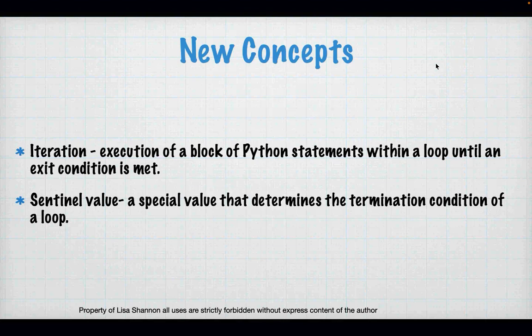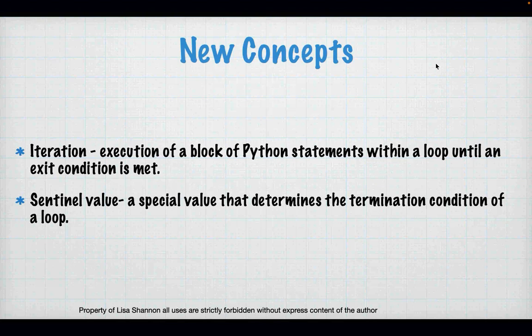We have two new concepts: iteration and sentinel value. An iteration is one trip through a loop — that's all it is. A sentinel value is a special value that determines the termination condition of the loop. If you don't have a loop with a terminating condition, it will run forever and chew up at minimum all the RAM in your system. We have to be careful not to write infinite loops unless we're meaning to.